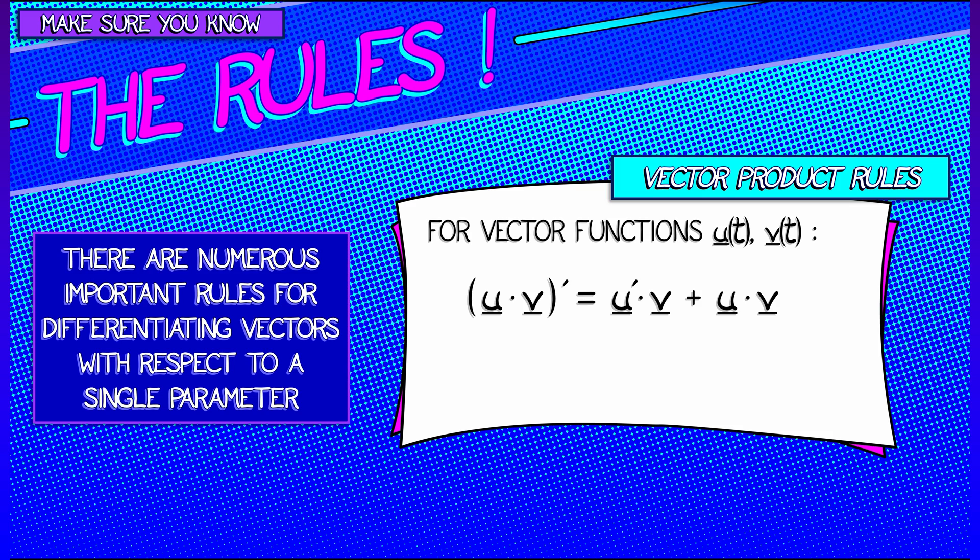Then, if you take the dot product, u dot v, differentiate that with respect to time, you get a product rule. u dot v prime is u prime dot v plus u dot v prime. Works just like the old product rule that you know and love, but now for dot products. That's cool.